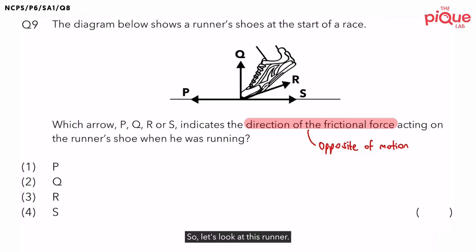So, let's look at this runner. You can see this runner is running. And in which direction is he going to move in? We know the runner is going to move towards the left. So, if he moves towards the left, what is the direction of frictional force?